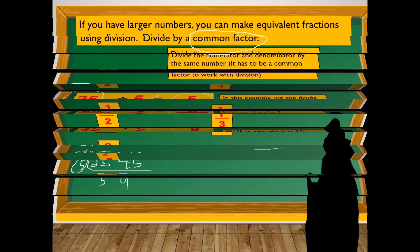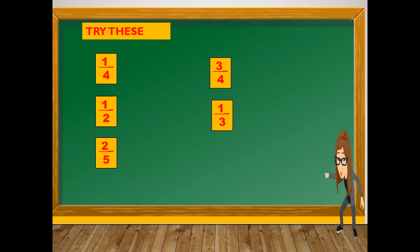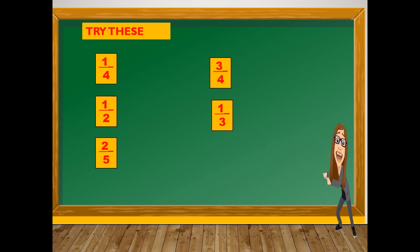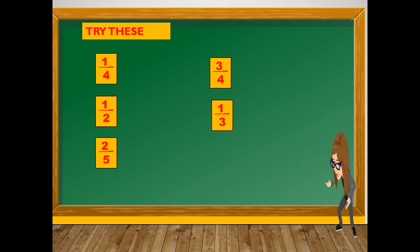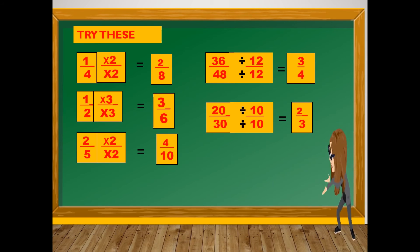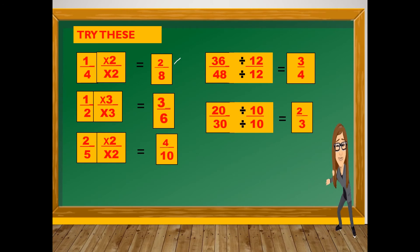Now try these: one-fourth, one-half, two-fifths, three-fourths, and one-third. Let's check your work. Number 1 — one-fourth times 2: one times two is two, and four times two is eight. Therefore, two-eighths is equivalent to one-fourth.